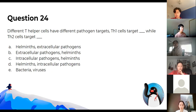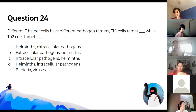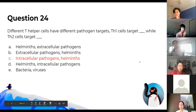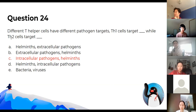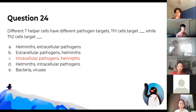Th1 cells target intracellular pathogens and Th2 cells target helminths. Th2 over-activation occurs in asthma — a Th2 response is good for helminths, but in a normal person it can manifest as asthma.